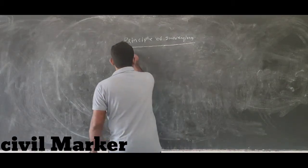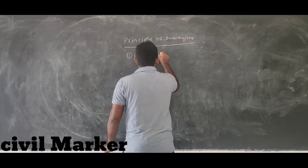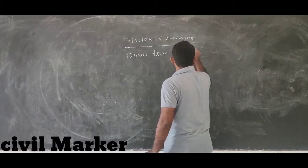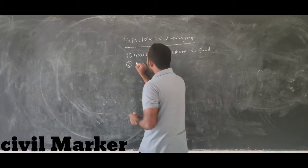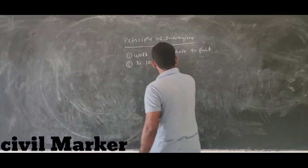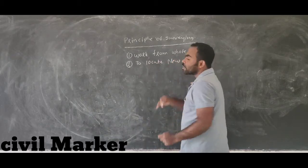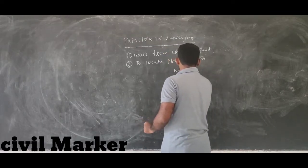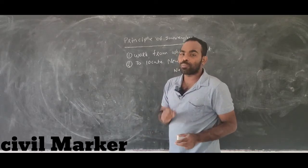The first one is: work from whole to part. The second one is: to locate a new station or new point, we want to take the reference from fixed points.